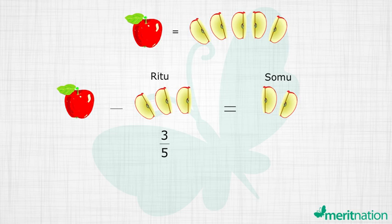This was what Ritu ate, that is 3/5. So what Somu ate is 1 minus 3/5, or 2/5. Now look at 3/5 and 2/5. The denominator 5 is common, and between 3 and 2, obviously 3 is greater than 2, so Ritu had the larger share.